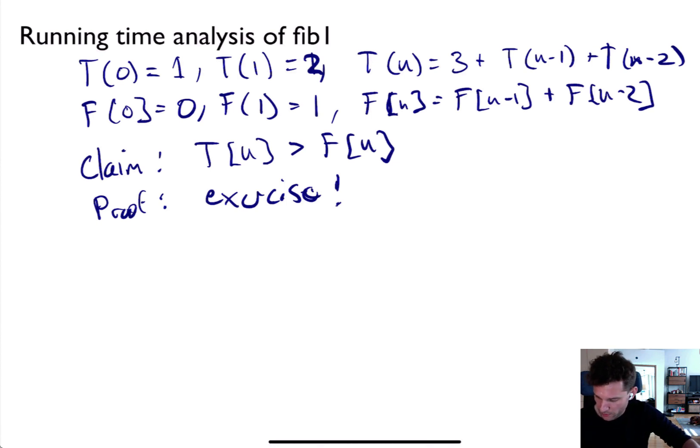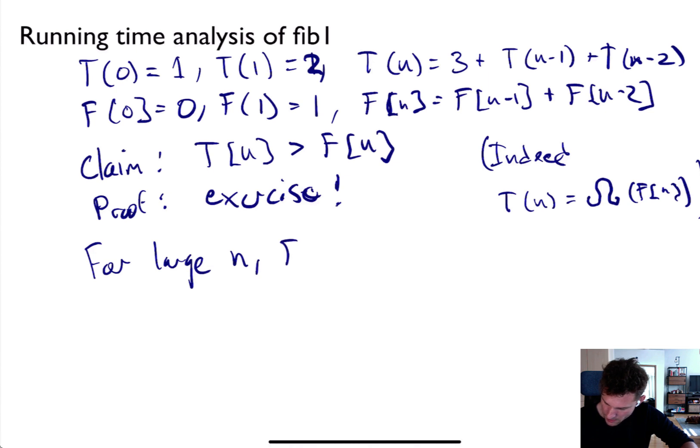Not only because you're adding the last two terms, but you're getting larger with that three. So we know that T(n) is going to be larger than F(n). And in fact, we can also write that T(n) = Ω(F(n)), if you like.